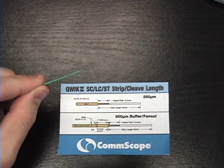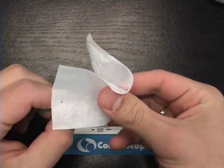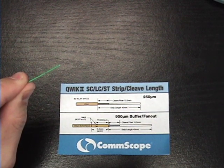Next, we can clean the fiber with a cleaning solution to get any of the remaining coating off. And now, we are ready to cleave the fiber.